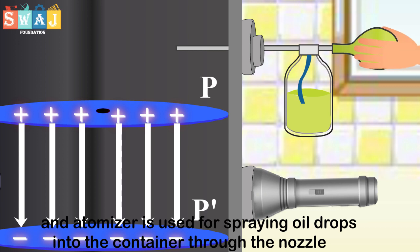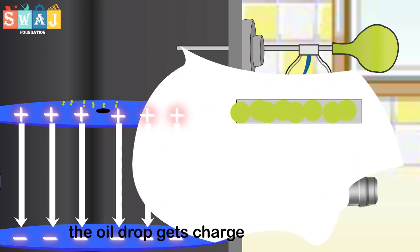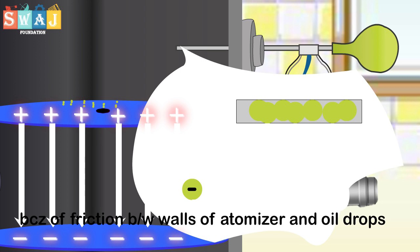An atomizer is used for spraying oil drops into the container through the nozzle. The oil drops get charged because of friction between walls of atomizer and oil drops.